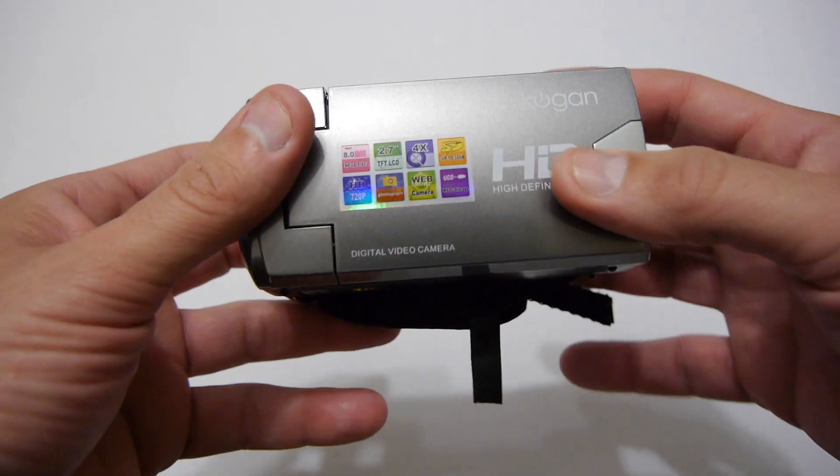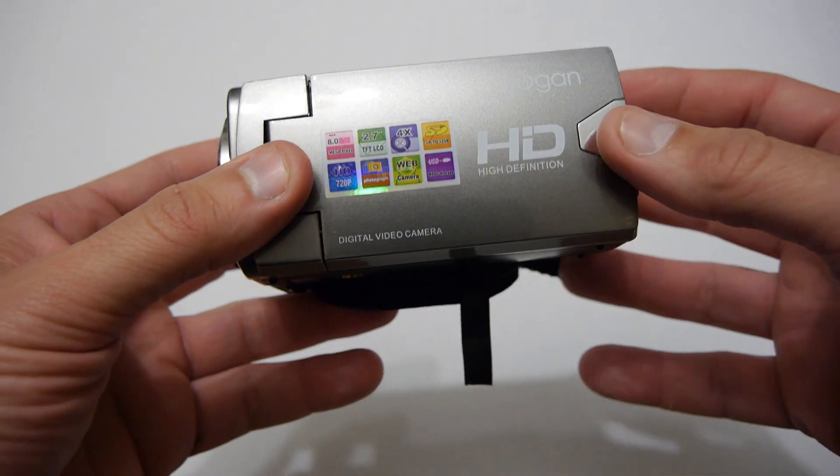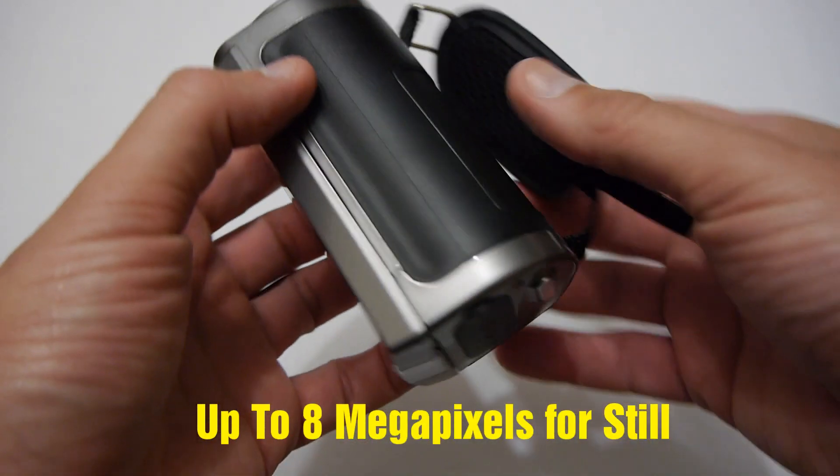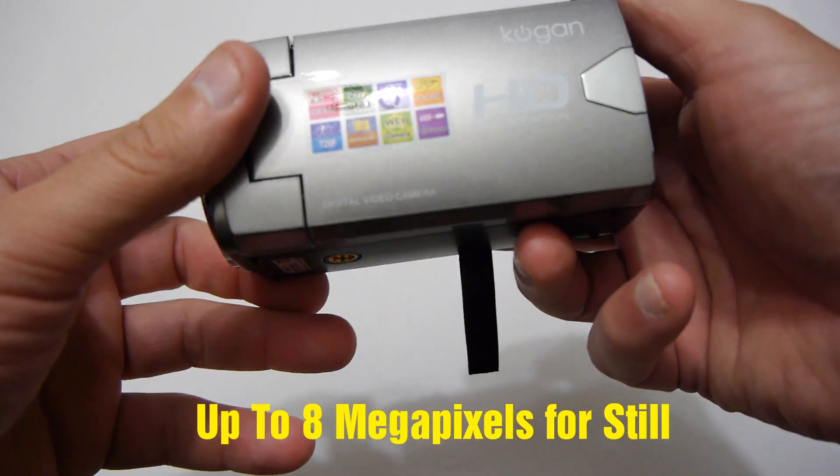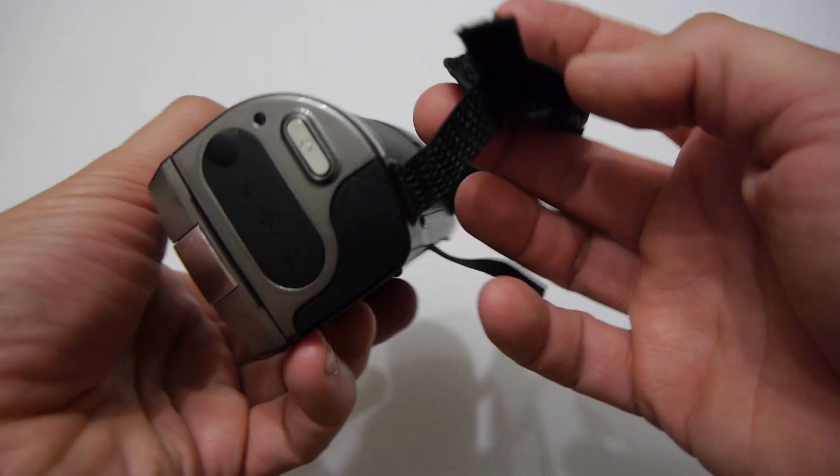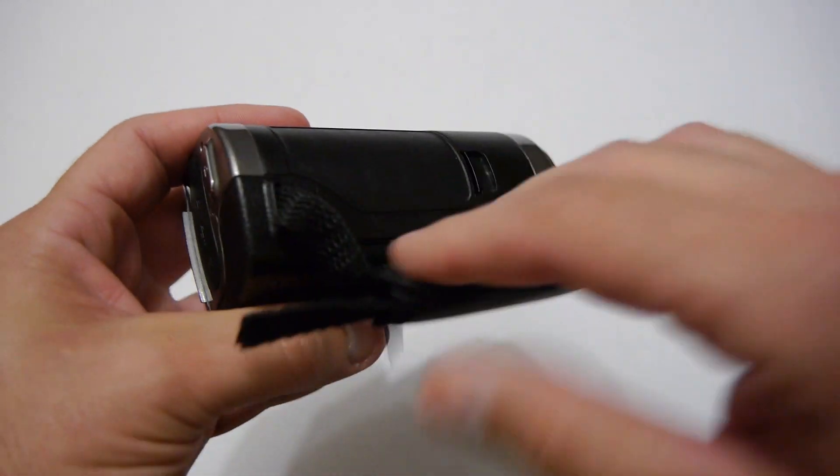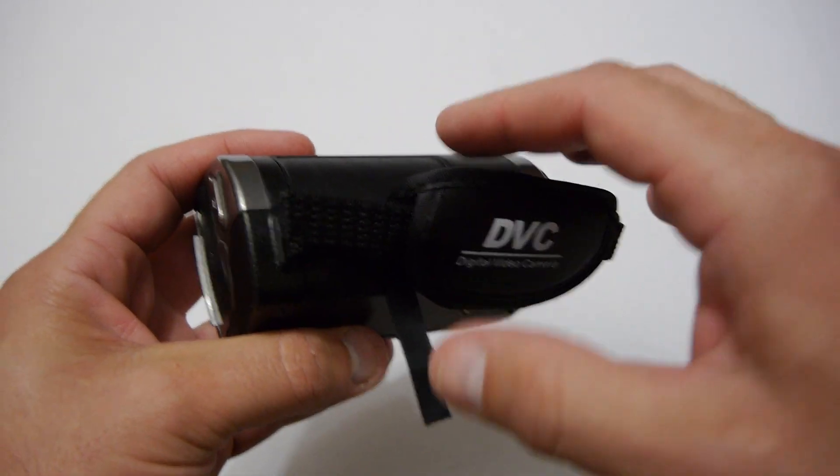Now this camera only does 720p, it doesn't do 1080p and it supposedly does a reasonable job of stills. So it'll be interesting to see. So next what we'll do is we'll put the batteries in and we'll do some recording and stills so you can have a look at it.